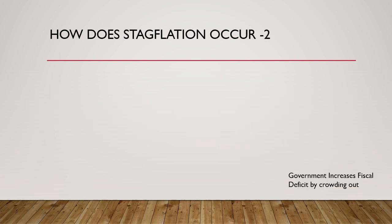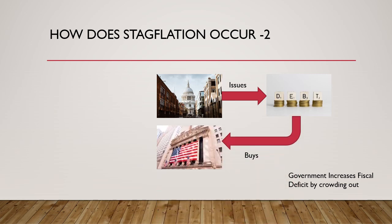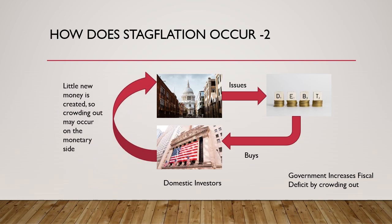Let's take a second scenario: the government increases its fiscal deficit through the crowding-out phenomenon. Here the government increases its fiscal deficit — spending more than the revenues it receives — by issuing debt. This debt is bought by domestic private investors in the market, so in other words little new money is created; it comes from the same pool of money.